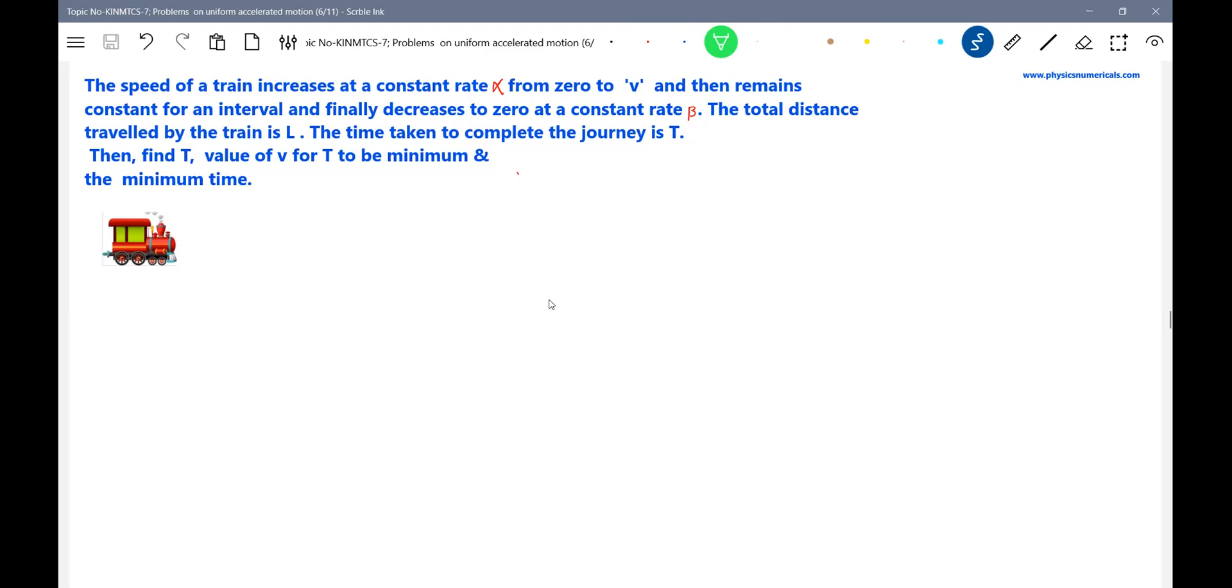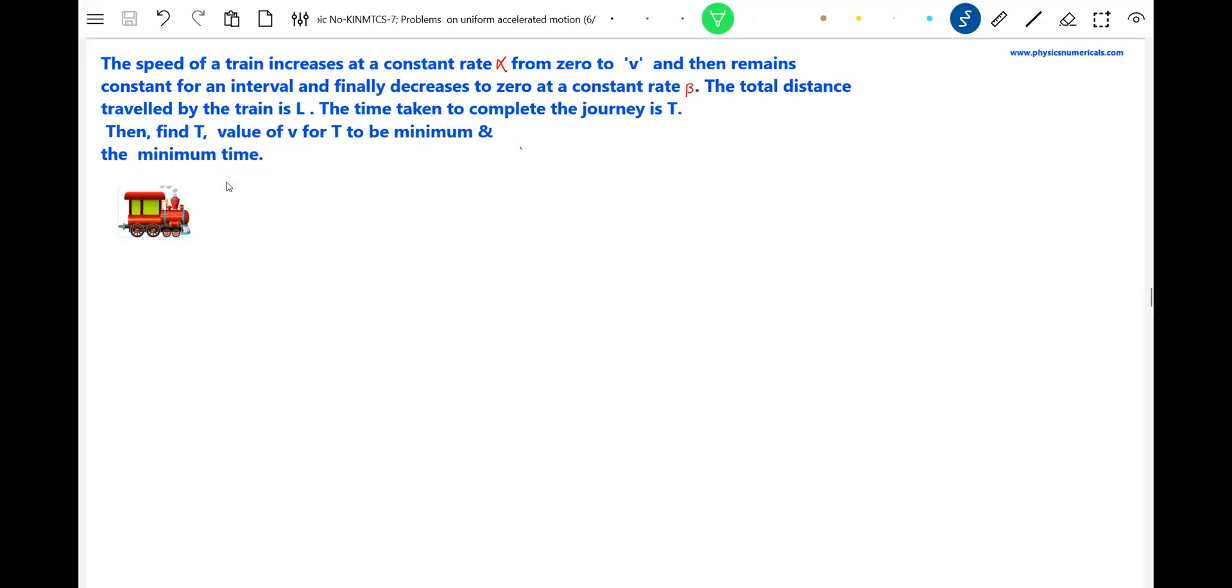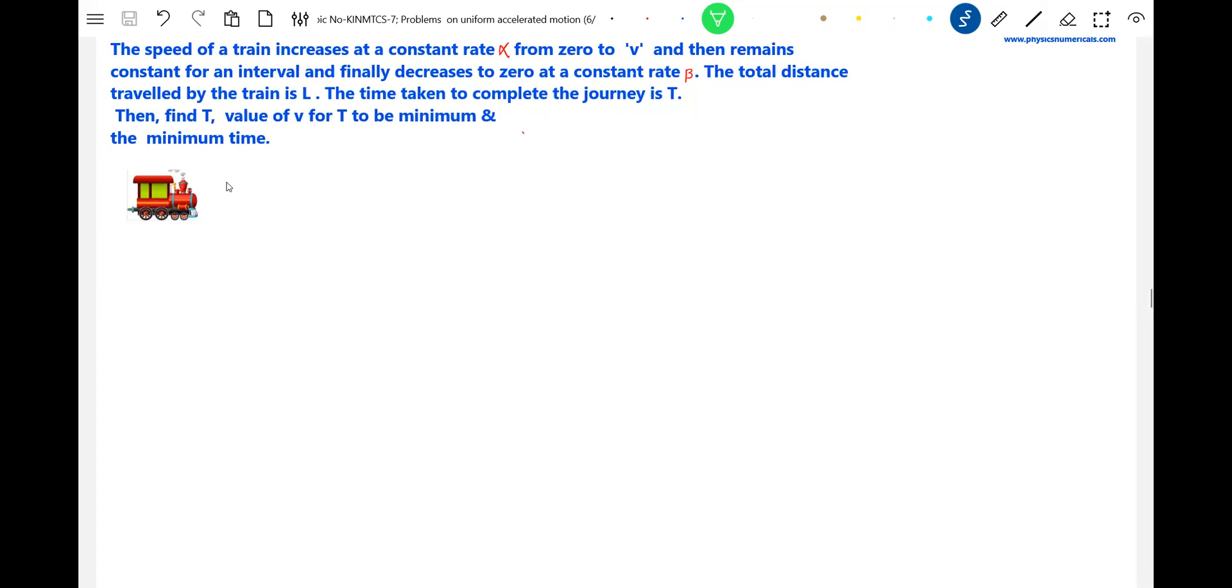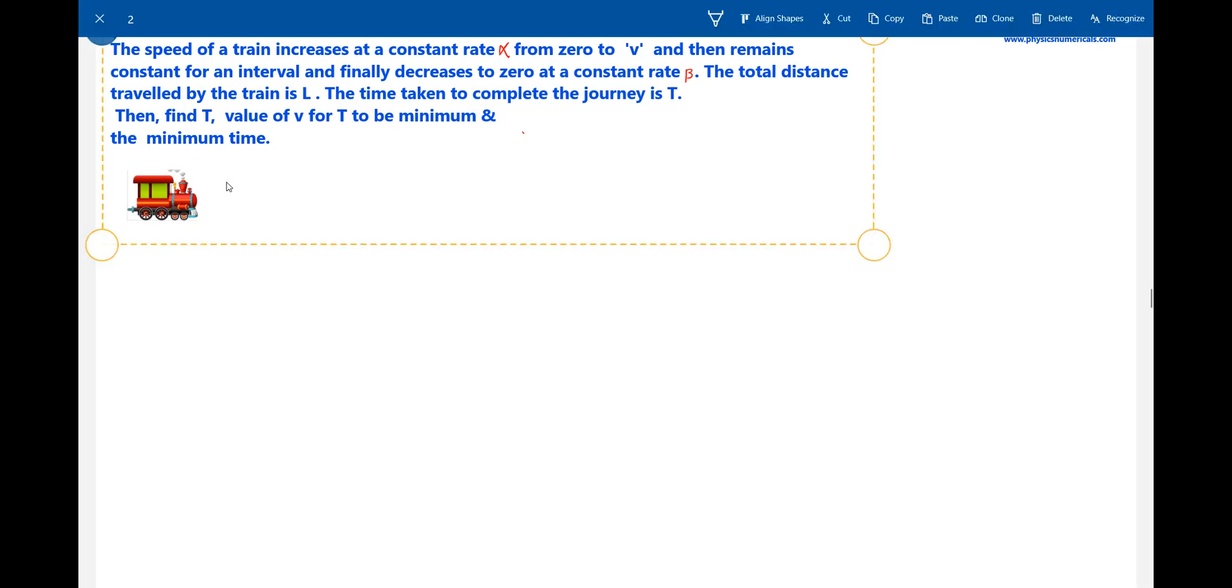Okay, the next one. Let me go for full screen. No, the speed of a train increases at a constant rate alpha, then decreases. First, let me describe how that motion occurs.